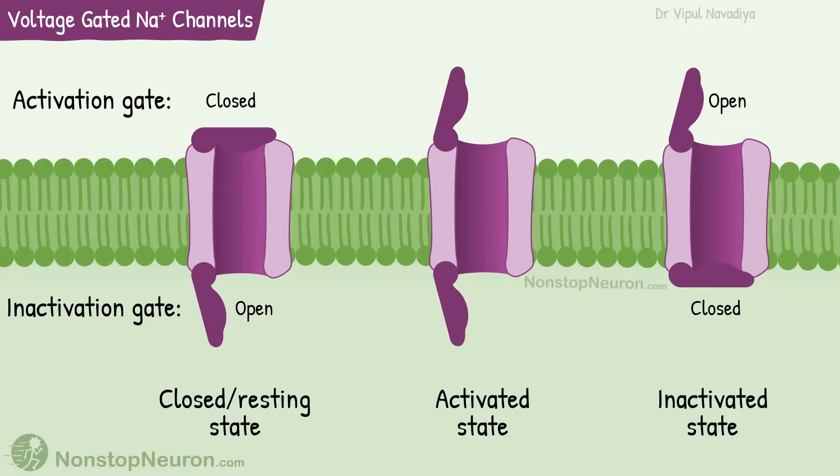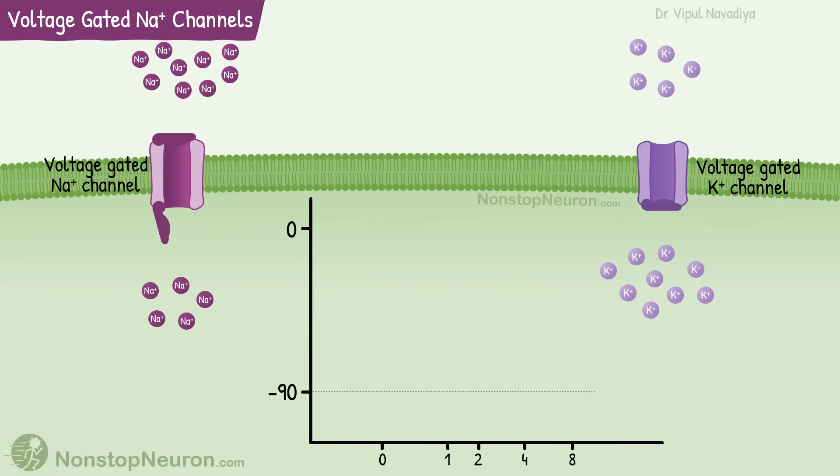In an activated state, both the gates are open and ions can move through it. Now let's see what exactly happens with these gates during an action potential.